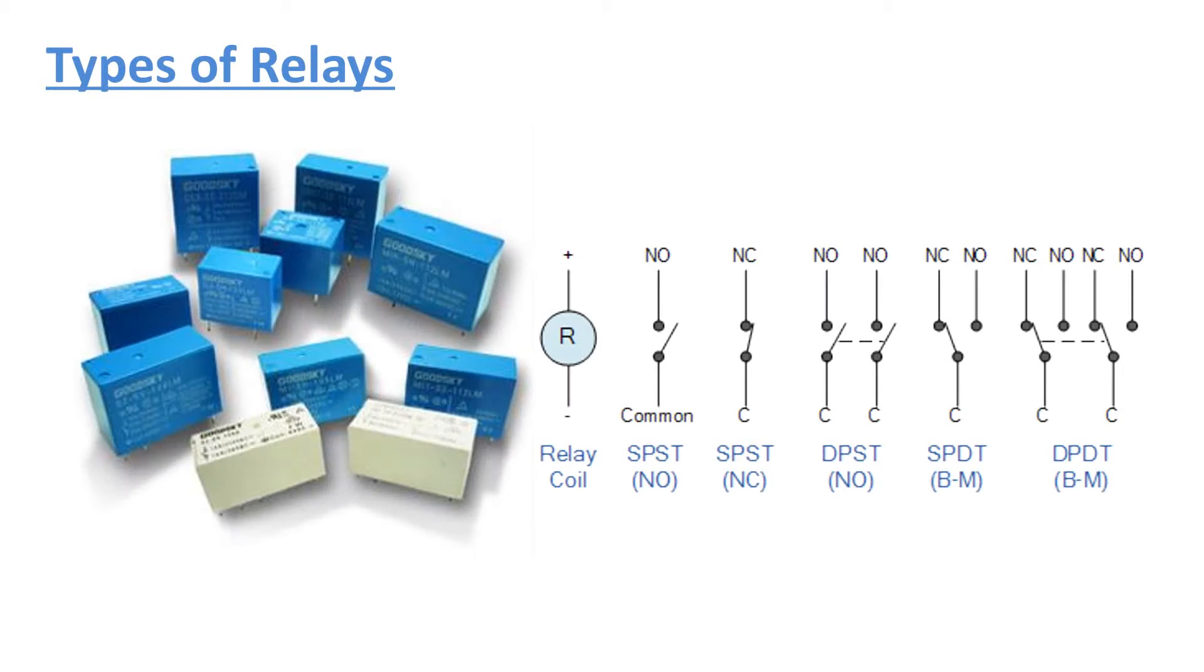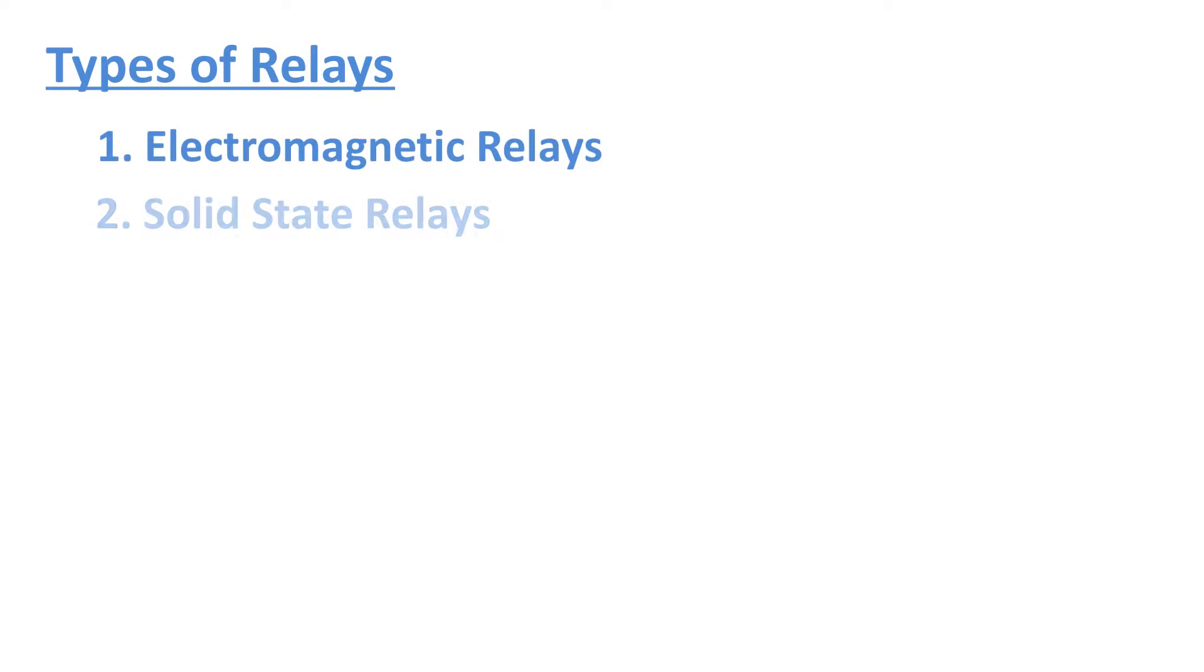A relay is a large mechanical switch which is toggled on or off by energizing a coil. Depending on the operating principle and structural features, relays are of different types, such as electromagnetic relays, solid state relays, thermal relays, power varied relays, reed relays, and hybrid relays.